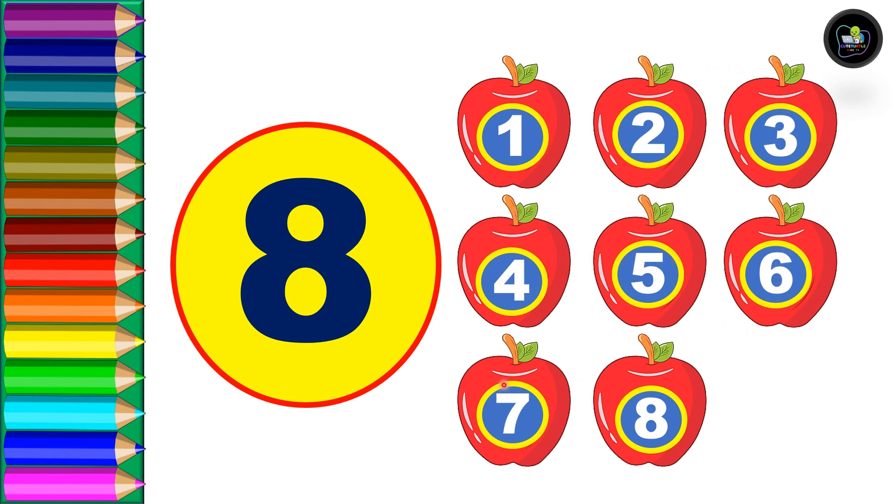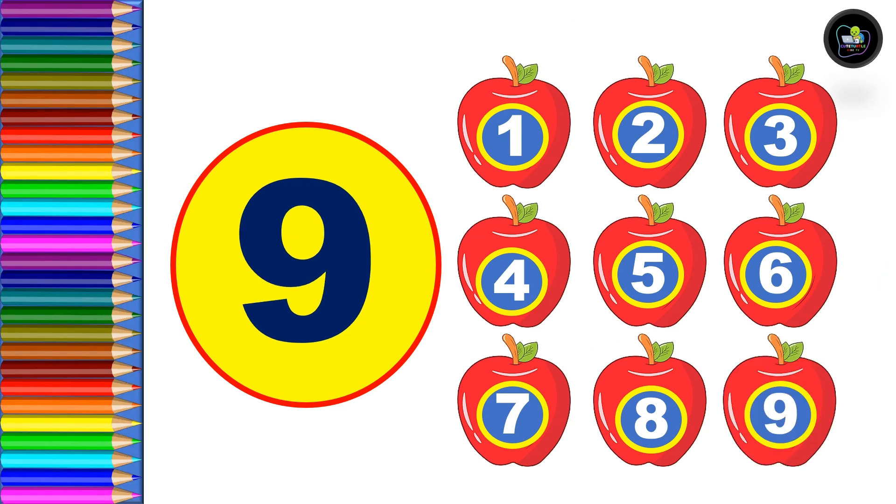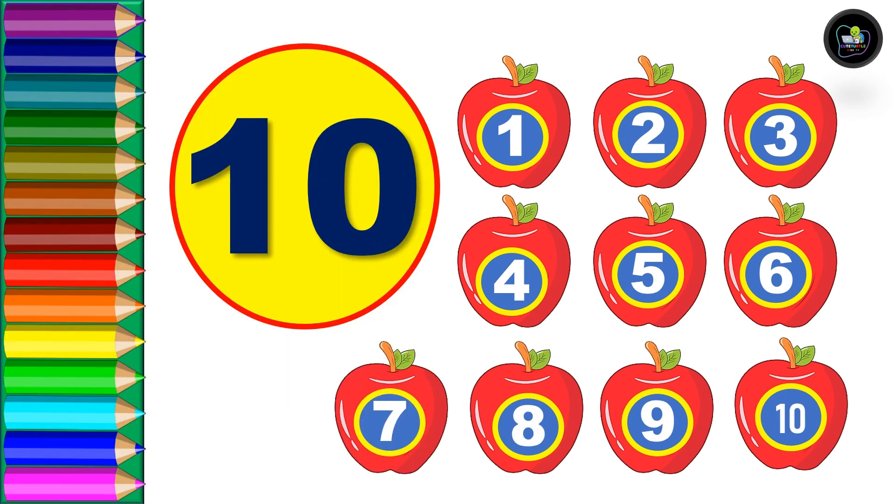Next, eight: one, two, three, four, five, six, seven, and eight, total eight apples. Nine: one, two, three, four, five, six, seven, eight, and nine. You see, three rows with three apples in every row, so total nine.